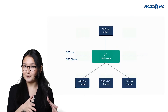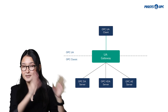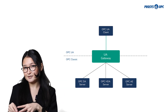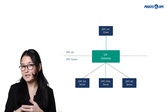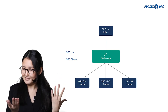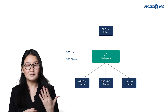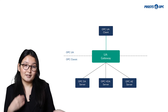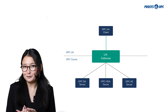For example, the UI Gateway can be placed between an OPC UA Client and an OPC Classic Server. Those two can be installed on the same PC, and you can keep using it as it is. The UI Gateway will do all the work for you.